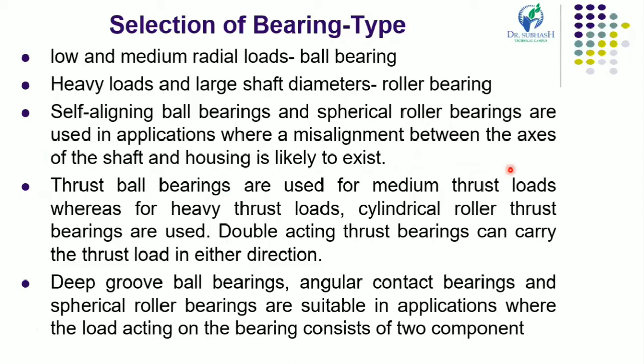Now, selection of bearing type. The selection of bearing type for a particular application depends upon the requirements of the application and the characteristics of different bearing types. For low and medium radial loads, ball bearings are generally used, whereas for heavy loads and large shaft diameters, roller bearings are generally selected. Self-aligning ball bearings and spherical roller bearings are used in applications where misalignment between the axis of the shaft and housing is likely to exist.